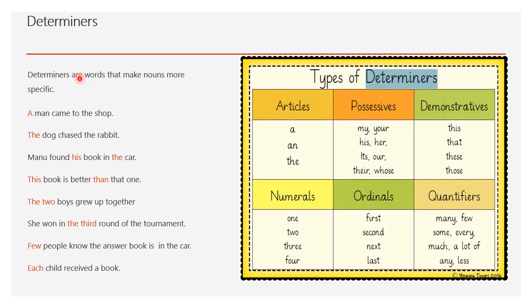Determiners specify the noun terms. These are the determiners in English: Articles, possessive, demonstrative, numerals, ordinals, quantifiers. Let's have some examples. A man came to the shop. A is an article. The dog chased the rabbit. The is an article. Manu found his book in the car. The is an article and his is a possessive. This book is better than that one. This and that is used for demonstrative. The two boys gave you a computer, that represents numerals. And she ran in the third position that represents the ordinal. Few pupils, that represents the quantity. Collectively, these are known as determiners.